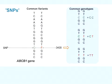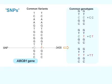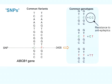Thus, using real-life illustrations, there are two common variants, C or T, at a specific position in the multidrug transporter gene ABCB1. Most individuals will have the genotype CC, CT, or TT with respect to this SNP, and the CC genotype has been associated with resistance to anti-epileptic drugs.